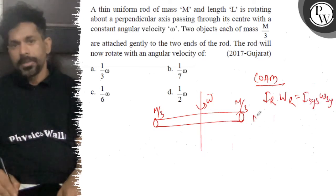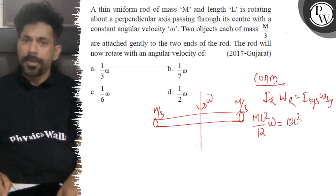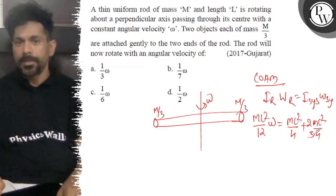So I road mL square by 12 into omega is equal to, now I system how much? mL square by 12 plus 2 into mL square by 4. And how much? m by 3. So we multiply from 3 into 2 omega dash.